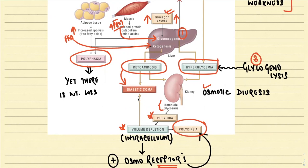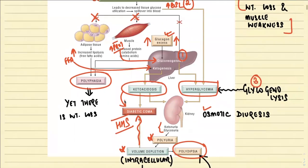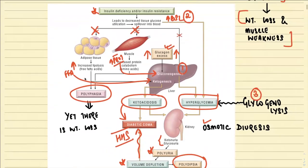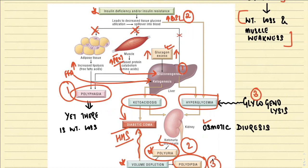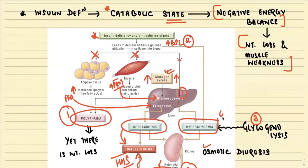Because of severe dehydration, it can also lead to diabetic coma — that is HHS, hyperosmolar hyperosmotic state. In summary: polyphagia occurs because of the catabolic state and excessive breakdown of adipose tissue and muscle; polyuria occurs because of osmotic diuresis; polydipsia occurs because of stimulation of osmoreceptors. The causes of hyperglycemia are excessive gluconeogenesis, elevated blood sugar levels, and excessive glycogenolysis.